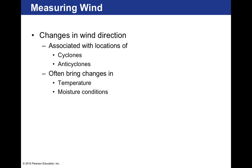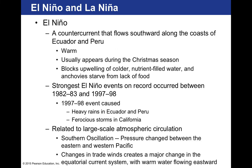Winds are associated with cyclones, which are low pressure zones, and anticyclones, which are areas of high pressure, and they often bring changes to temperature and moisture conditions.